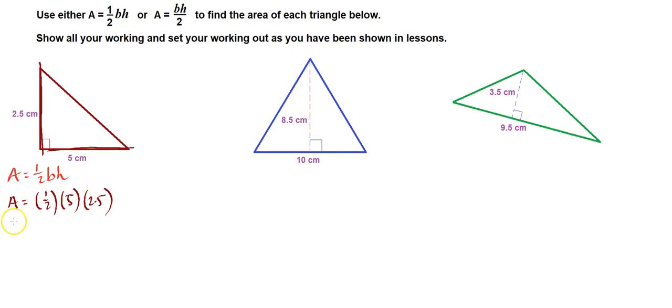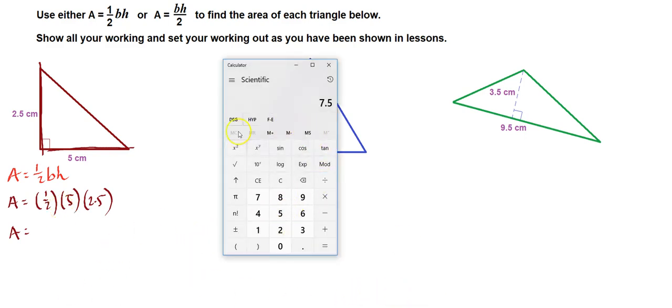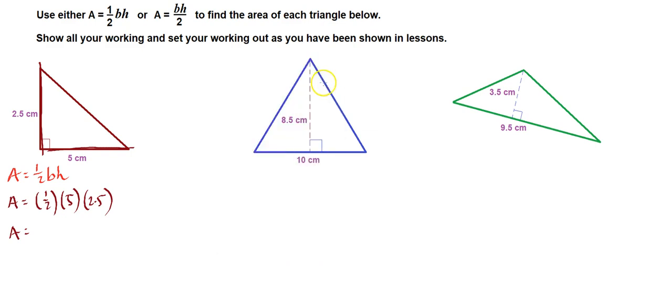Now it's just a simple case of multiplying. A half times 5 is 2.5, and 2.5 times 2.5, if that's a little bit tricky, use your calculator. You're allowed to use your calculator, so use it. So 2.5 times 2.5 equals 6.25. Let's write that down: 6.25, we're using centimeters, so that's the unit of measurement, and we're talking area, so those units of measurement are squared.